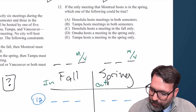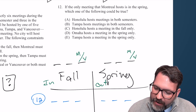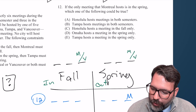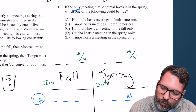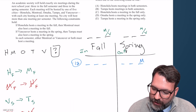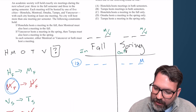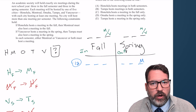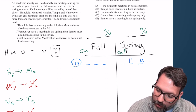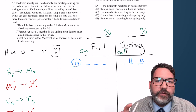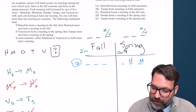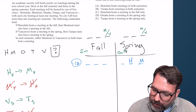Number 12: if the only meeting that Montreal hosts is in the spring, which one of the following could be true? The key word is 'only meeting' — M is only in the spring, which means M will not go in the fall, which means the contrapositive applies. So H cannot be in the fall, and since every city has to go at least once, H is definitely in the spring.